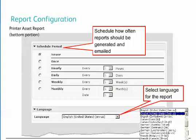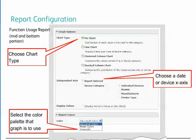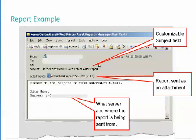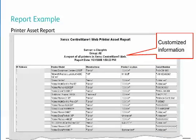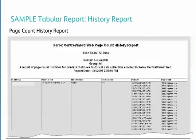For graphical reports, the user will be able to choose the graph type, the device category, and the color palette to be used. The email with the report attached has been sent. This is what the attachment in the email of the printer asset report might look like. The page count history report shows the page count history for devices that have historical data collection enabled.